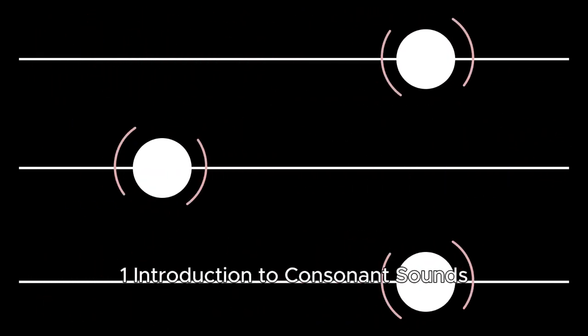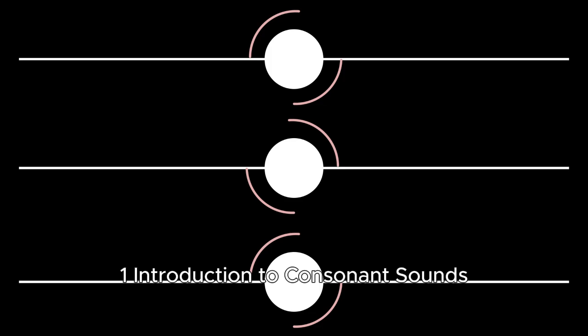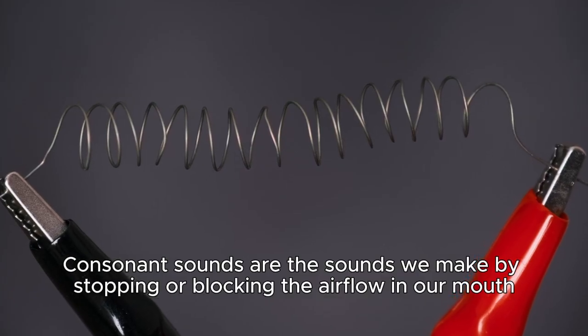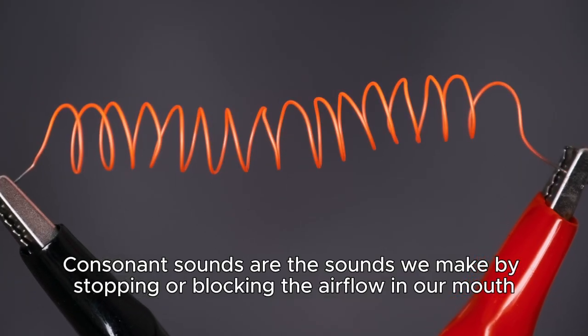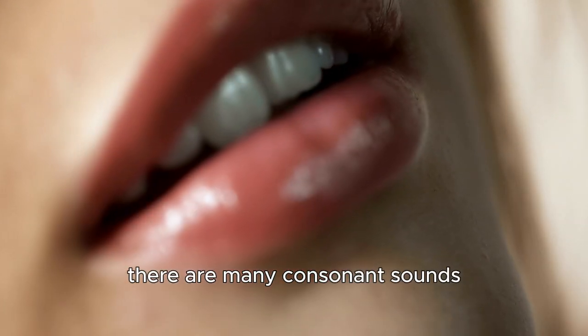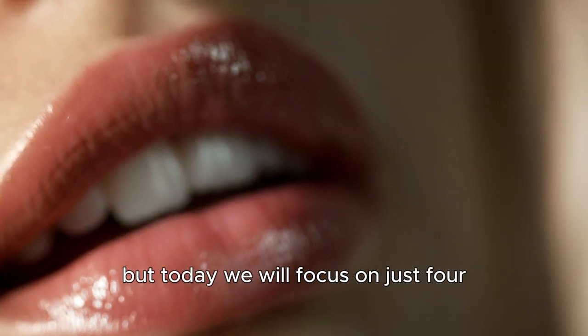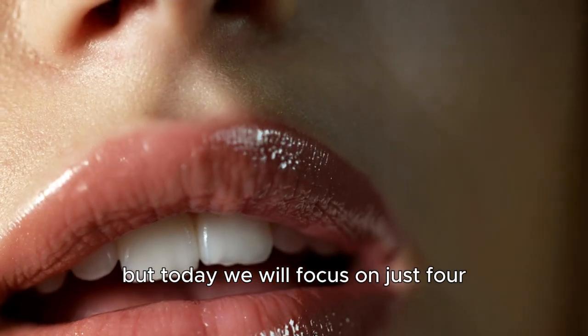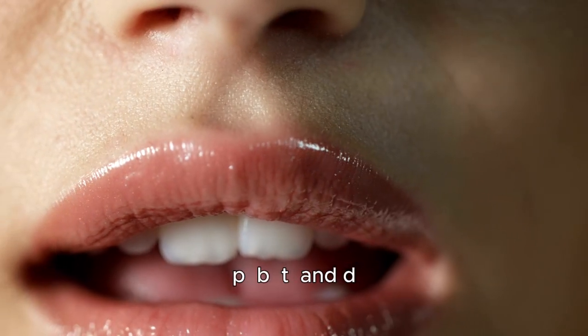Introduction to consonant sounds. Consonant sounds are the sounds we make by stopping or blocking the airflow in our mouth. In English, there are many consonant sounds, but today we will focus on just four: P, B, T, and D.